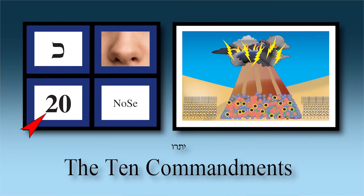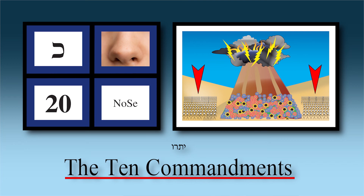The funny association for chapter 19 tub: in preparation for going to the mikveh, everyone has to remove anything that would be a chatzitzah — an interruption between skin and the water. So I imagine everyone taking baths in tubs in preparation for the mikveh, in preparation for Maamad HaSinai. Tub 19. Now we go to chapter 20 in Parashat Yitro.